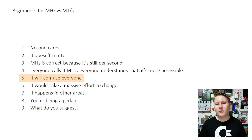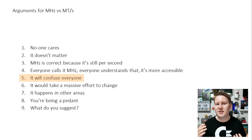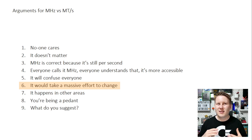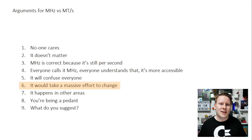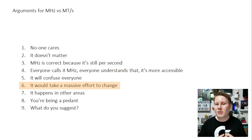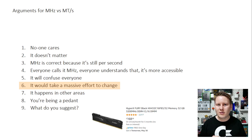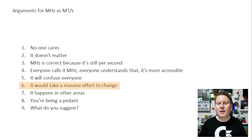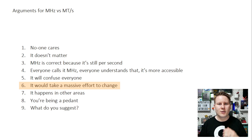Point five: it will confuse everyone. I don't think it will. There is a point at which you have to say, hey, we've been saying this wrong — it needs to be said right. Point six: it would take a massive effort to change. This is probably very true, but it still shouldn't be a barrier to using the right terminology — mega transfers per second instead of megahertz. One of the issues is that if you go buy memory on Newegg, Amazon, or your local retailer, or even on the memory vendor's or motherboard manufacturer's website, they still all use megahertz. I went into six vendors across seven boards in their BIOSes, and six used megahertz while one used no units at all.